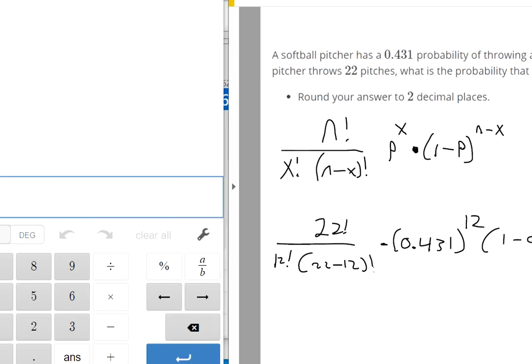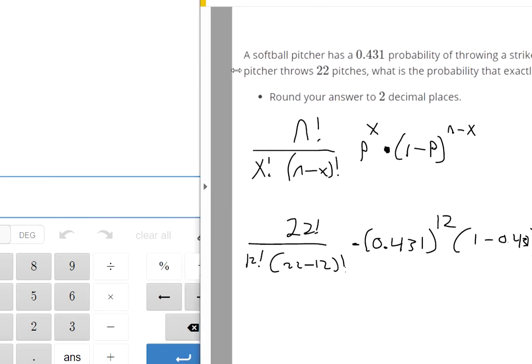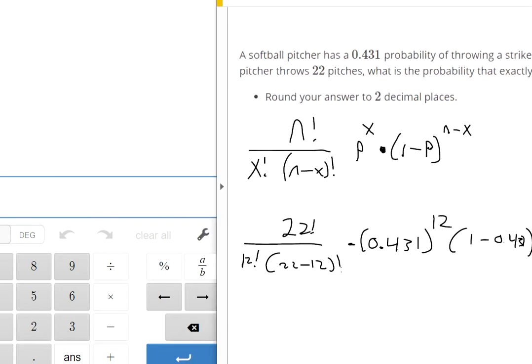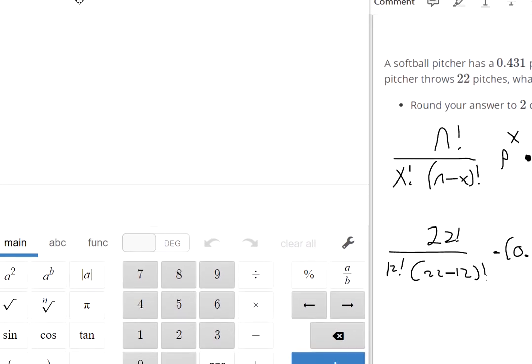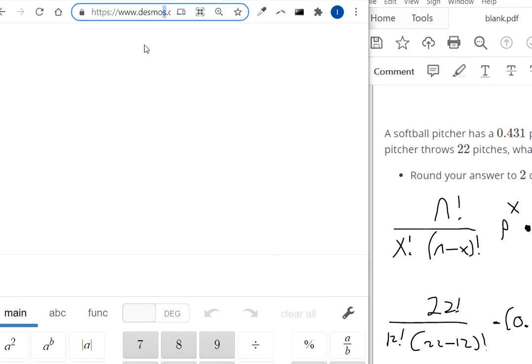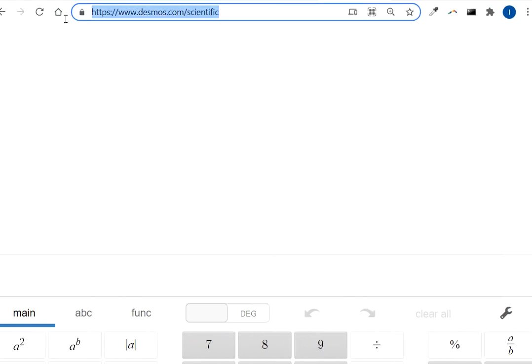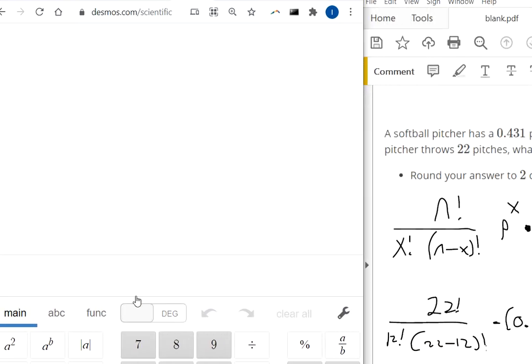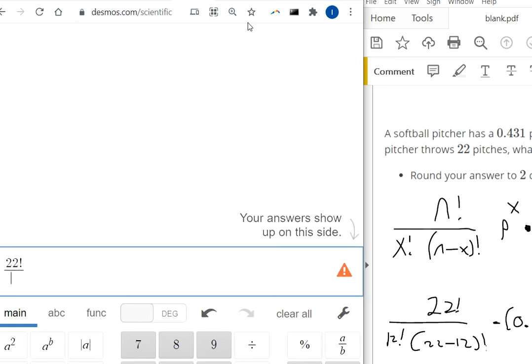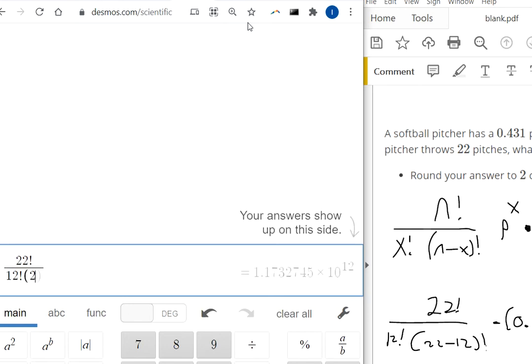I'll show you a website you can use, because you can do this with a regular hand calculator, it would just take a long time. The left side of your screen is a website called desmos.com/scientific, a free scientific calculator. I think we could get away with plugging this entire thing in and it would be able to do it for us.